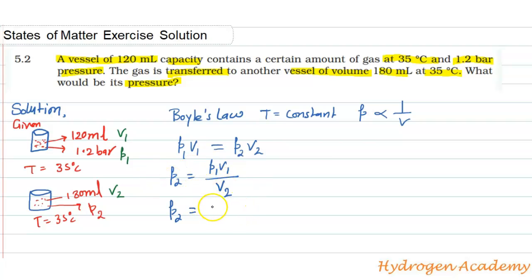So 1.2 bar times 120 mL divided by 180 mL. Now mL cancels. The calculation gives us: our answer will be 0.8 bar. Thank you.